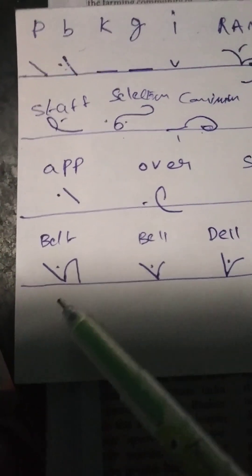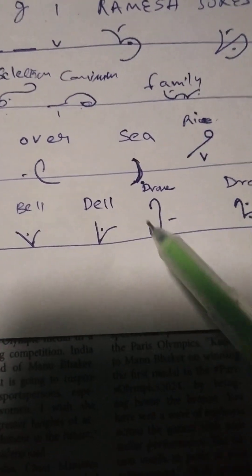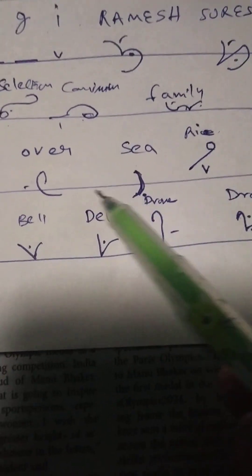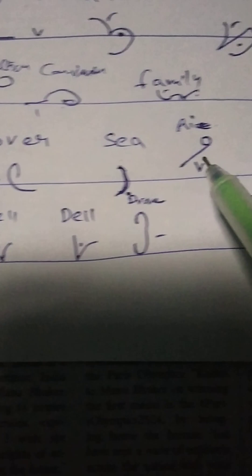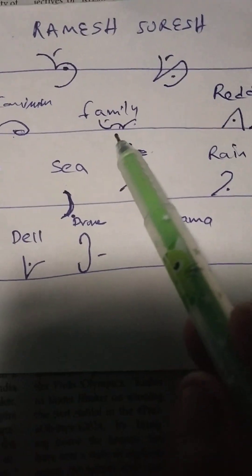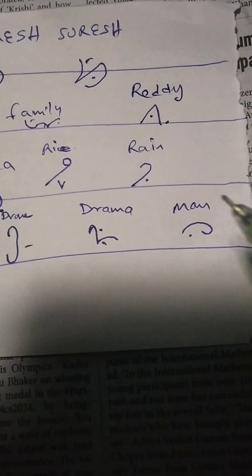Over, Belt, Bell, Dell, Drama, Sea, Over. Here you can see rice. Here you can see drama. Drone, Ma'am. Rain. Here you can see some details. Here you can see family. Here you can see red day. Rain.